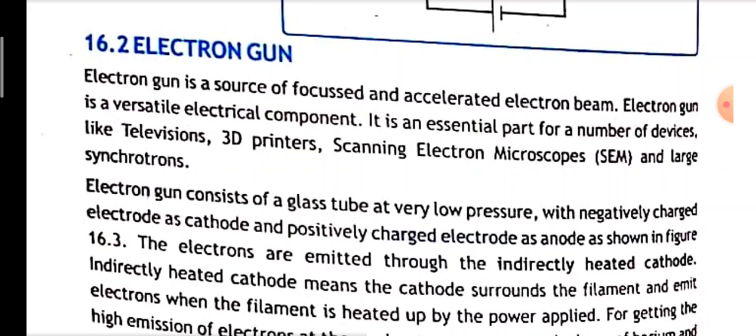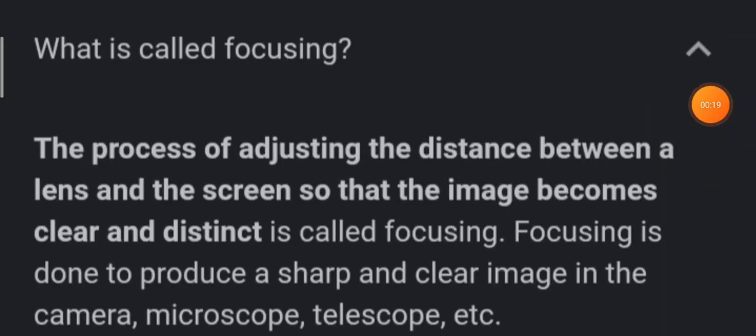The electron gun is a source of focused and accelerated electron beam. Focusing is the process of adjusting the distance between a lens and the screen so that the image becomes clear and distinct.